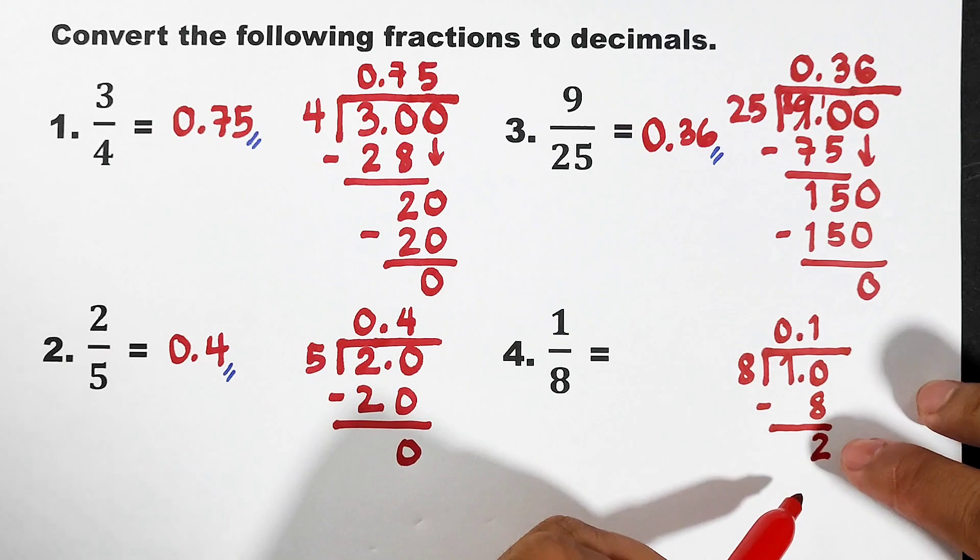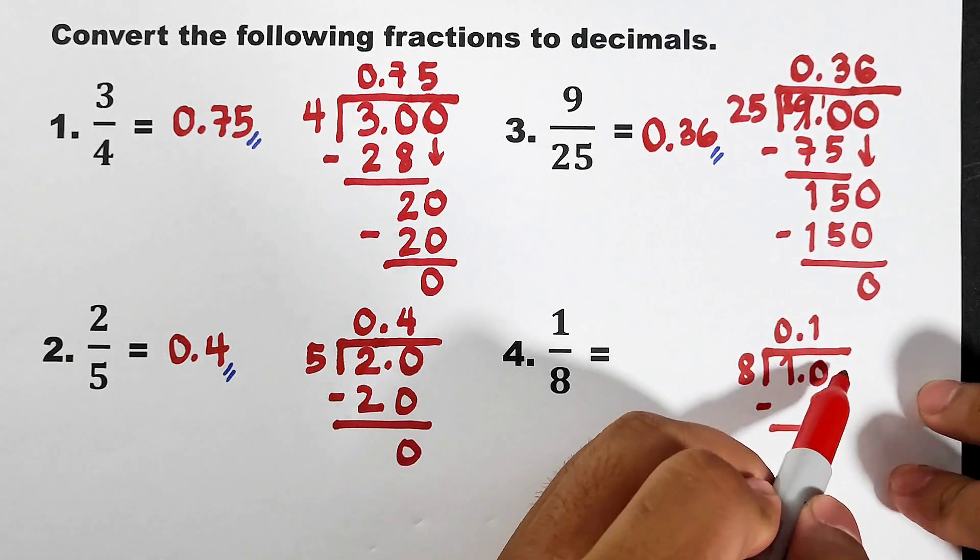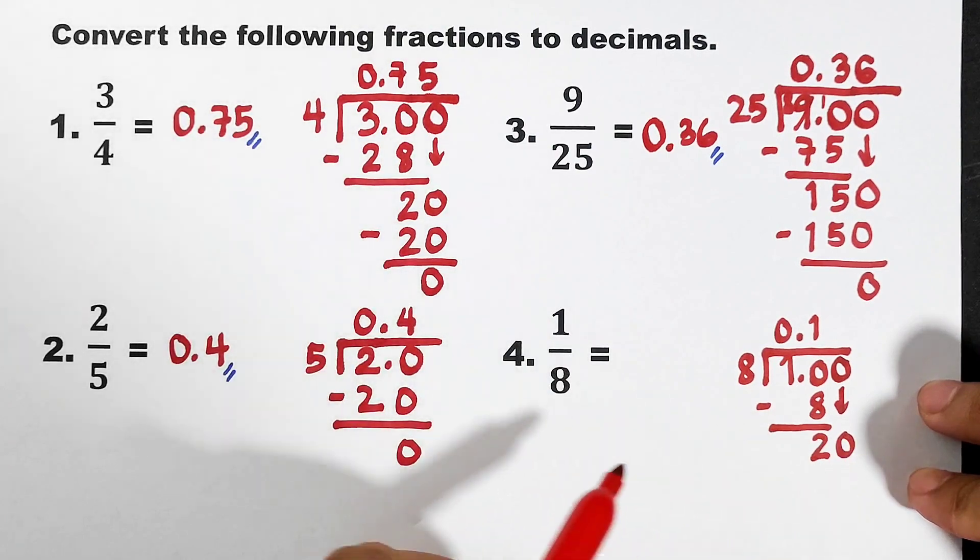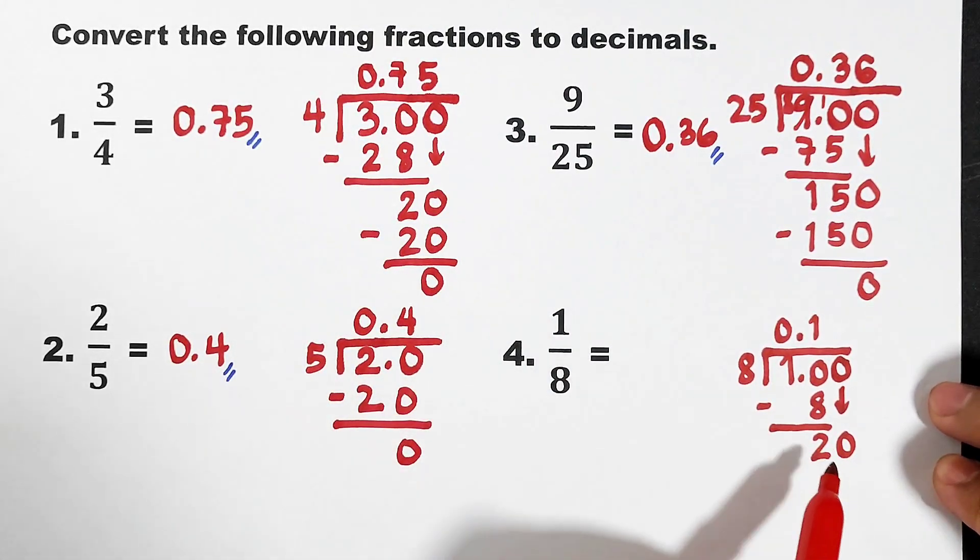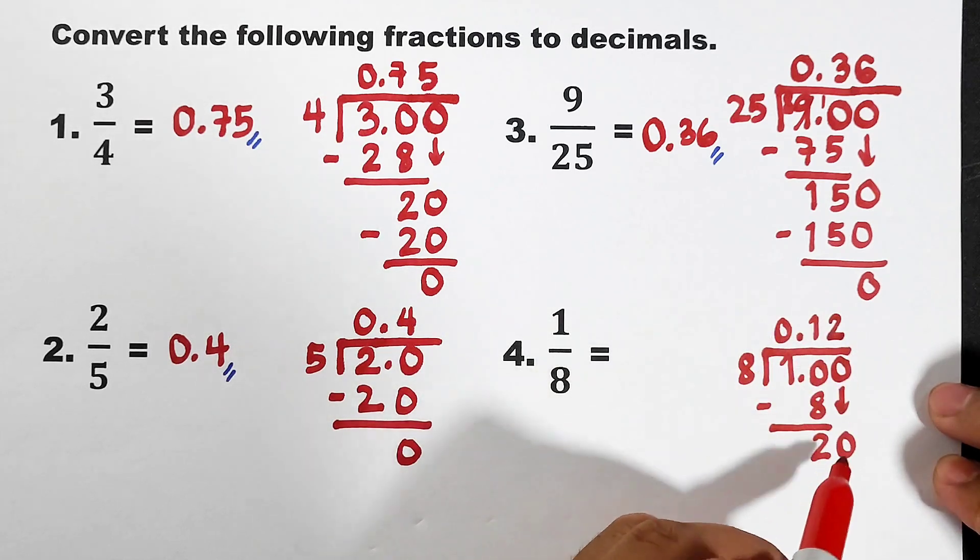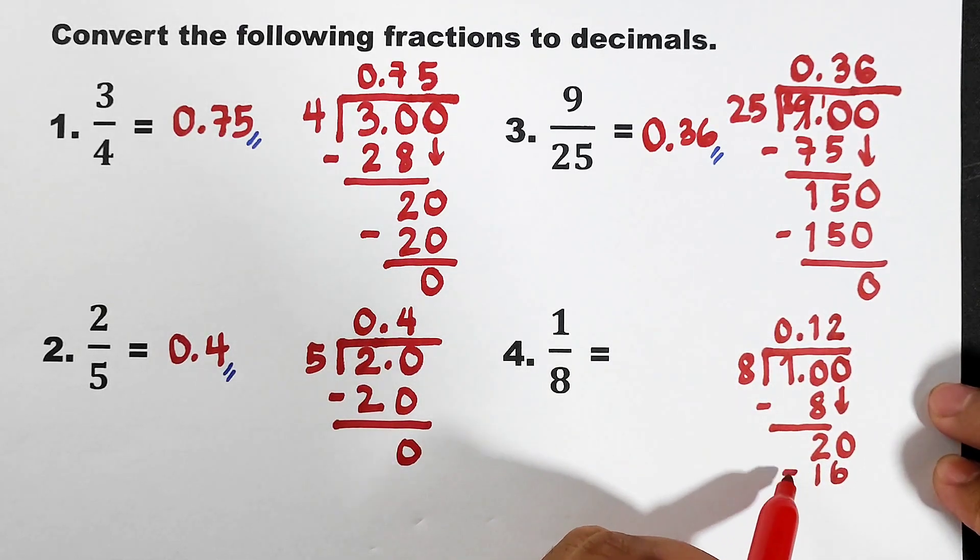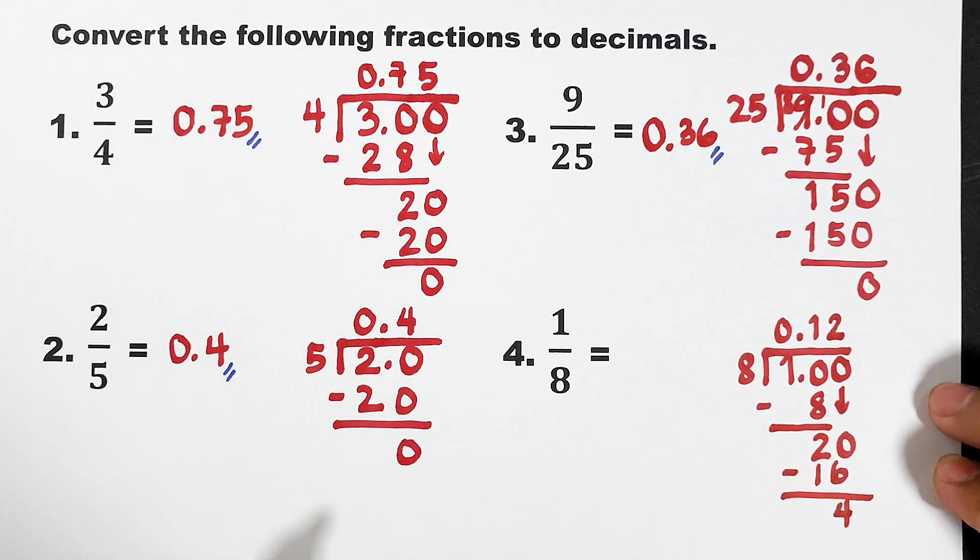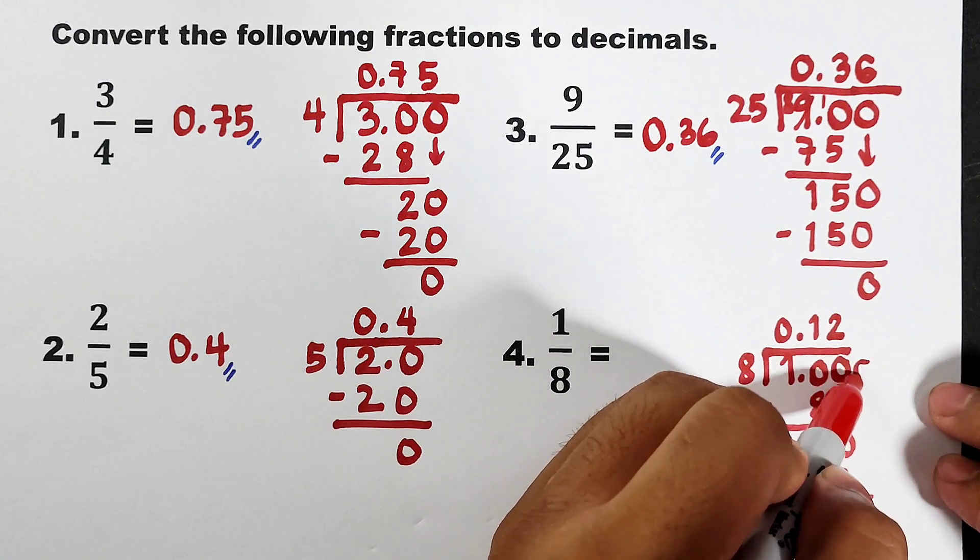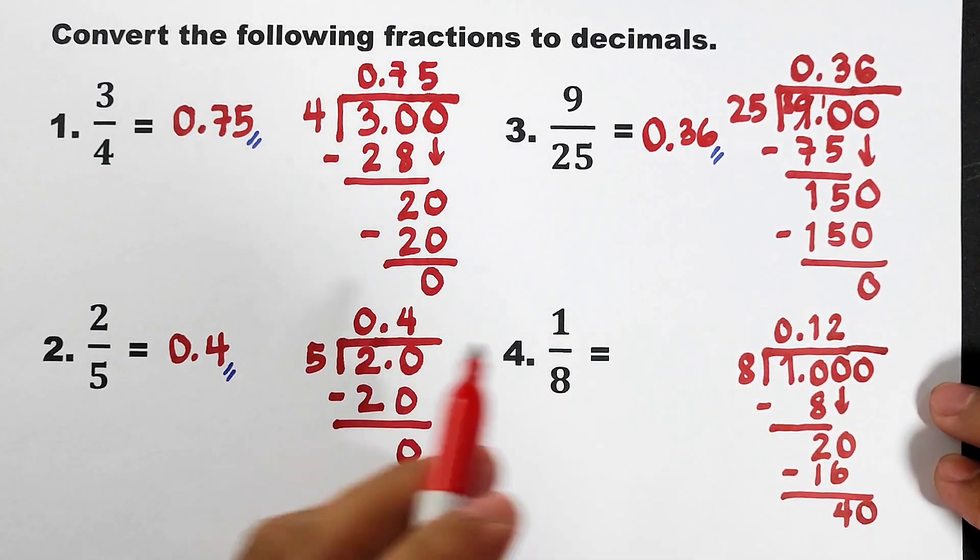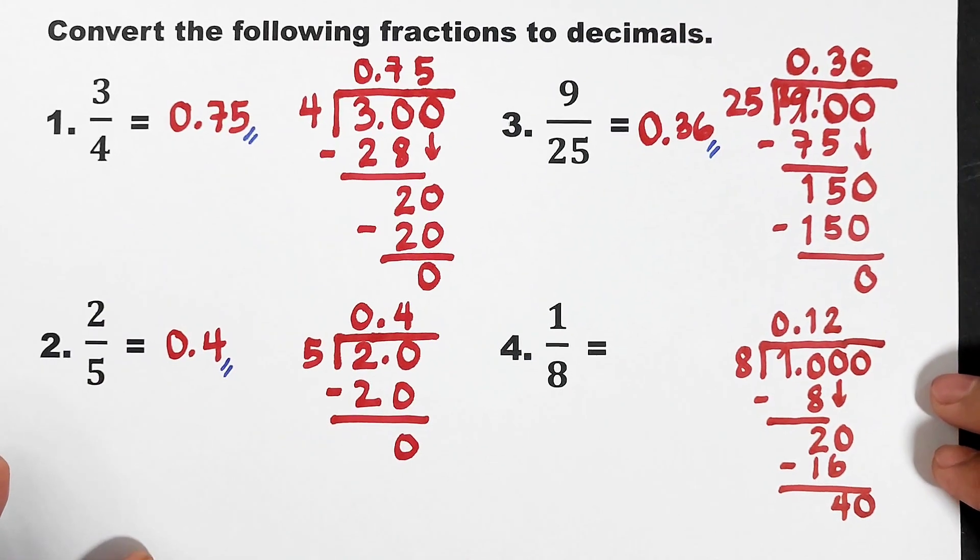So, we are not yet done because we still have this remainder 2. Extend by putting 0. Bring down 0. And we have now 20. 20 divided by 8 is 2. Because 2 times 8 is 16. Subtract them. It will become 4. 20 minus 16 is 4. We still have to extend it by putting 0 here. Bring down 0. I will adjust the paper.